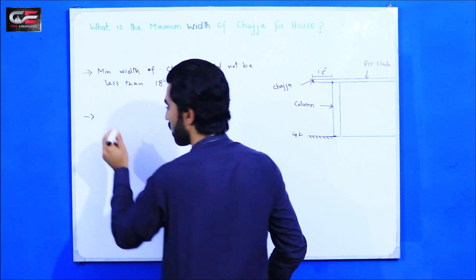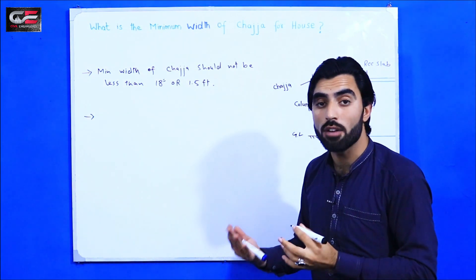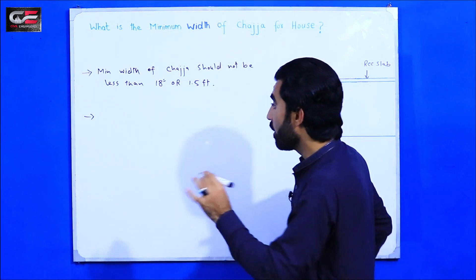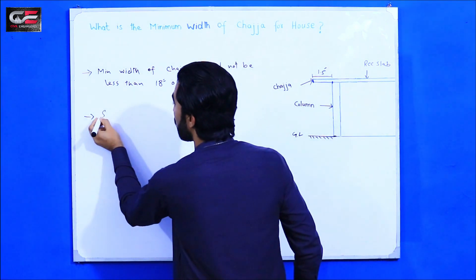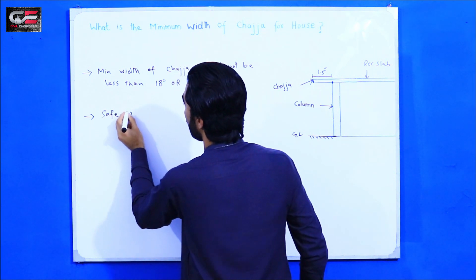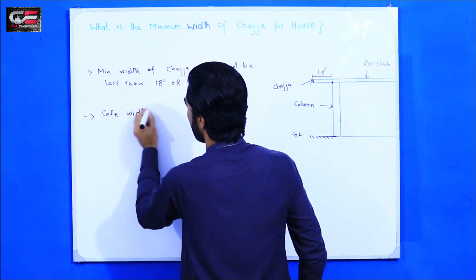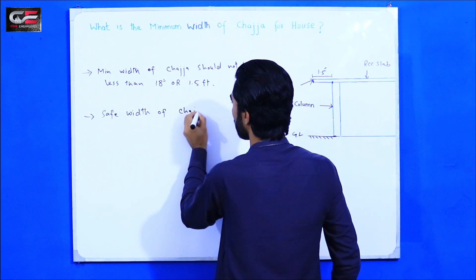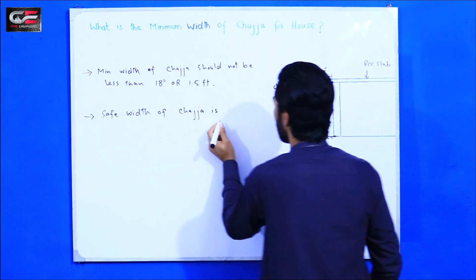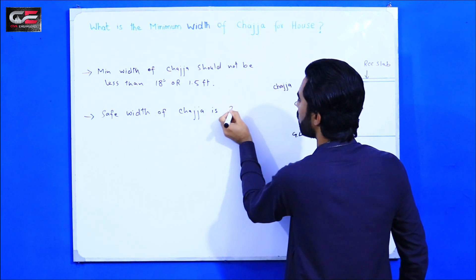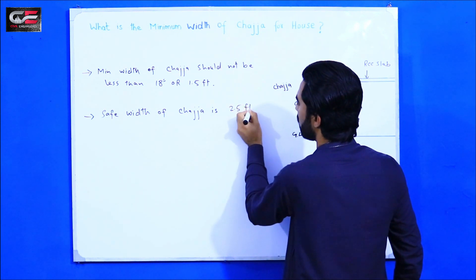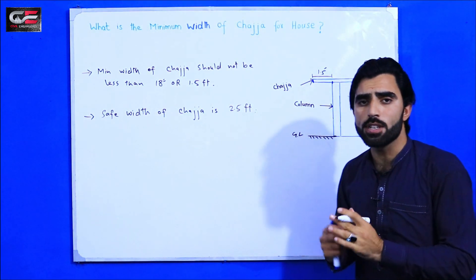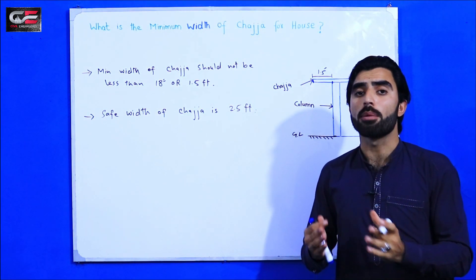Now here is a question: if you need to increase the width of chadja, what is the safe width? The safe width of chadja is 2.5 feet. Up to 2.5 feet you don't need to do a specific design for beam, column, or slab for the chadja.